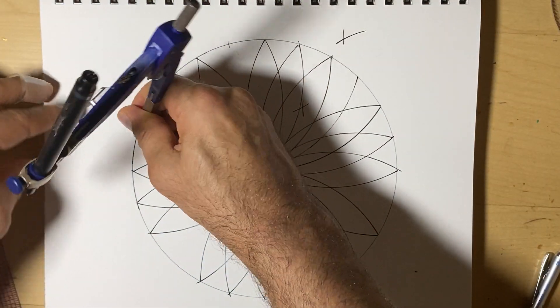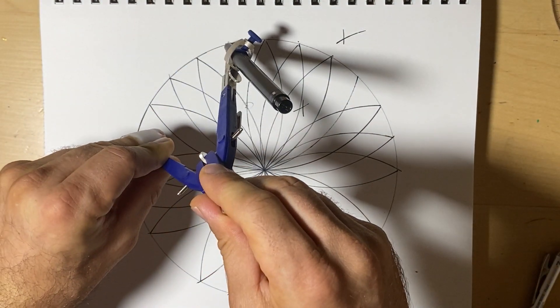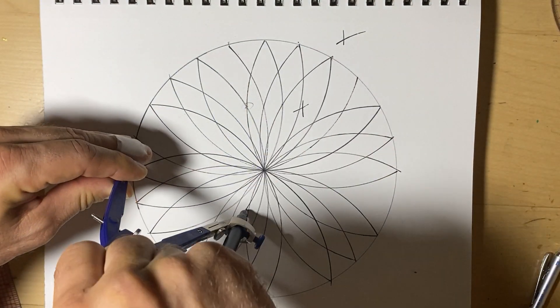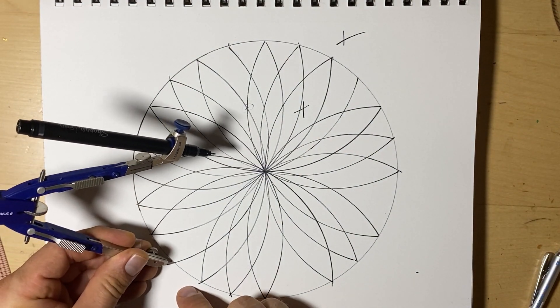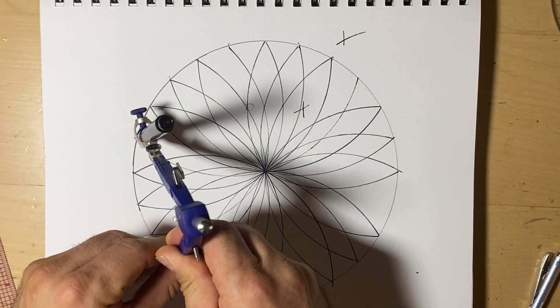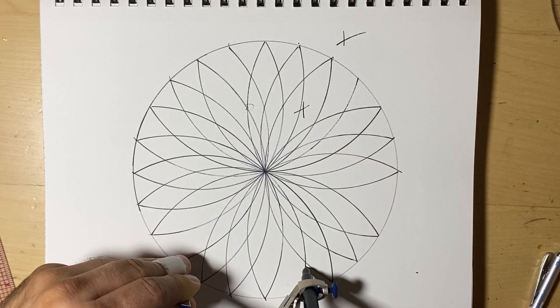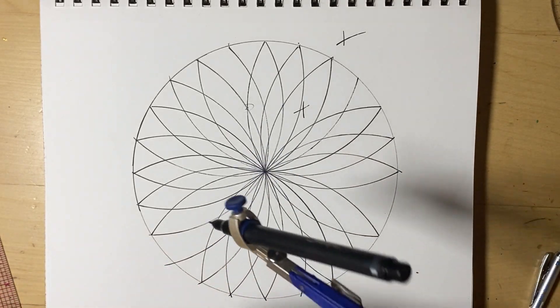And, you know, you could even, depending on the size or thickness of your marker, you could do more than 24. You could double it to 48. Also depends on the size of your paper. If the circles are really small, it starts to get too cramped up.